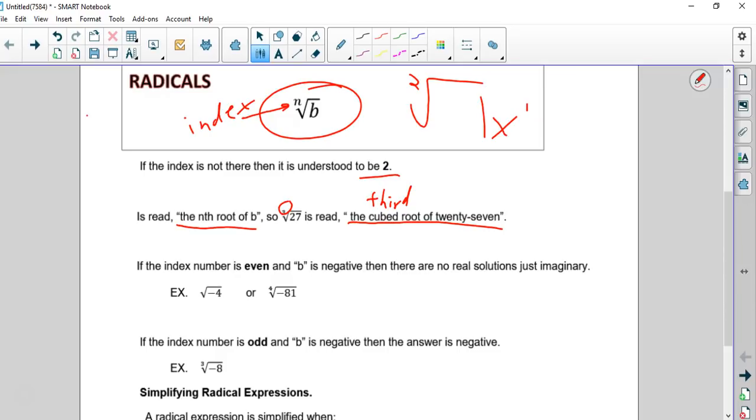Now, the index number, if this is even - so if it's the square root or a 4 or a 6 or an 8 - if the index number is even and the number inside is negative, then there are no real solutions, just imaginary. Right now, there is no square root of a negative number. Because remember, a square is a number times itself. A positive times a positive is positive, and a negative times negative is positive. Therefore, there's no true numbers you can multiply together itself to get a negative. So this is not solvable.